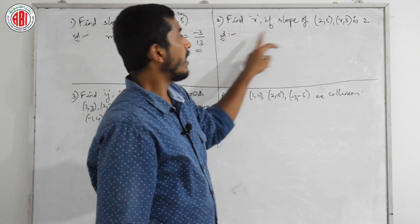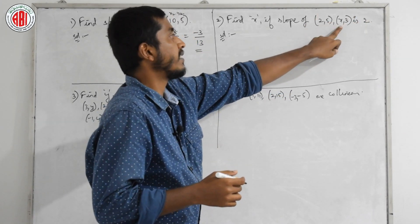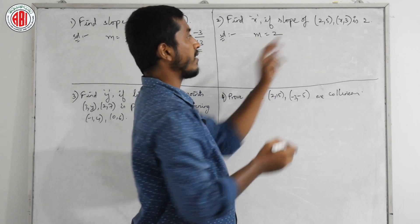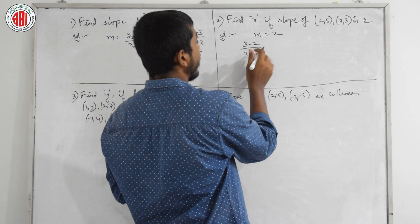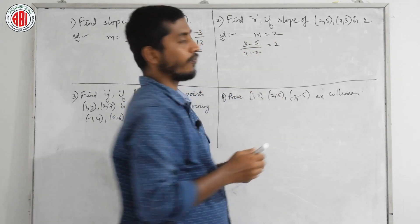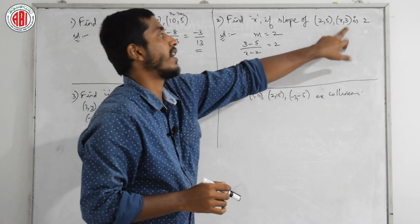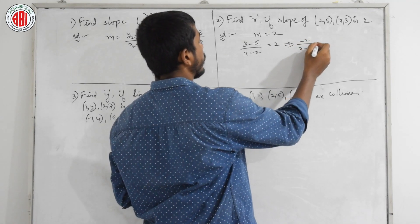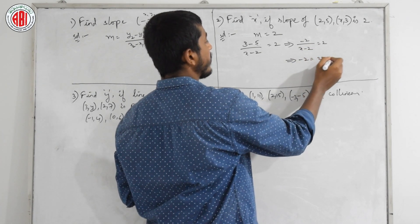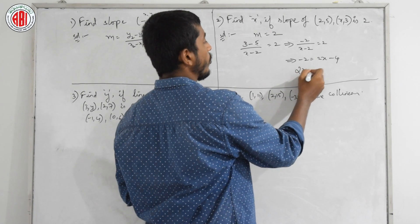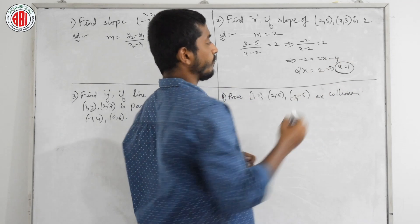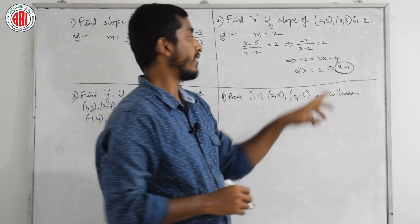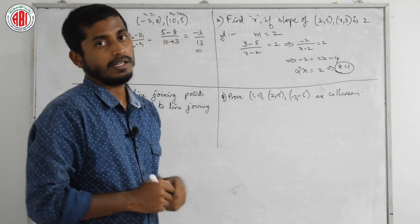Next example: the slope is directly given as 2, and we have to find the unknown variable x. Using m = (y2 − y1) / (x2 − x1): (3 − 5) / (x − 2) = 2, which gives −2 / (x − 2) = 2, so −2 = 2x − 4, and therefore 2x = 2, giving x = 1. That is the value of x when slope is 2.